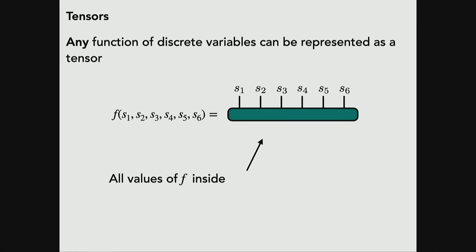Any function of discrete variables can be represented as a tensor — you just plug in all possible values of the function into the array. This works for any function whatsoever, and importantly, there are no nonlinearities here. Even though in neural networks you often hear that nonlinearities are required for powerful function approximation, here you have none and yet can represent any function. However, you pay an exponential price in this form, and we'll see how to break that exponential later.